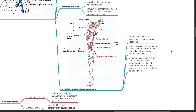Falls due to quadriceps weakness. Femoral nerve block is associated with quadriceps weakness. Inform the patient regarding the inability to bear weight on the extremity that underwent femoral nerve block. To reduce the risk of falls due to impaired knee extension and weight bearing, use knee immobilizers for ambulation.